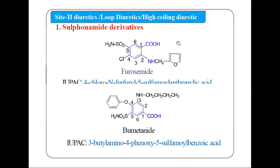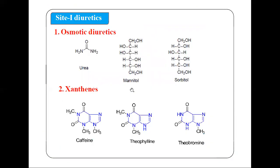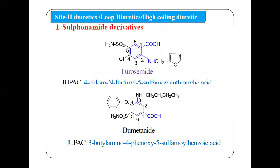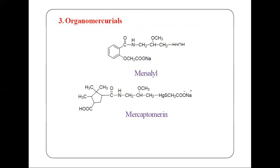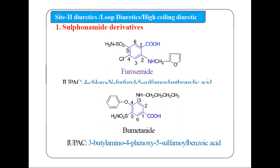Next in the classification we have site 2 diuretics, which are also called loop diuretics or high ceiling diuretics. Site 2 is present in the loop of Henle, which is why they are called loop diuretics. This class includes: sulfonamide derivatives, phenoxyacetic acids, and organomercurials. Let's first discuss the sulfonamide derivatives.